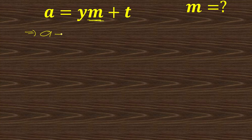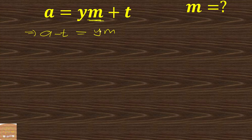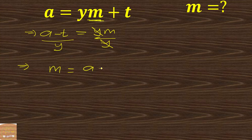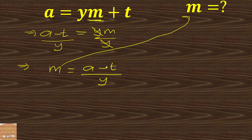We now have a minus t equals ym. Our target is m, so we need the coefficient of m to be one. The coefficient of m is y, so we divide both sides by y. This gives us m equals a minus t over y.